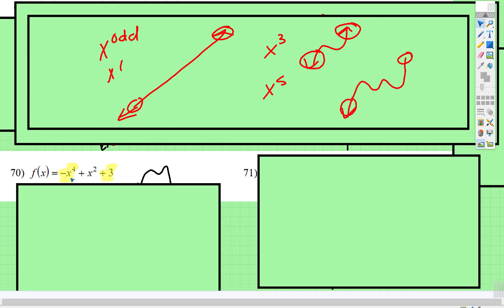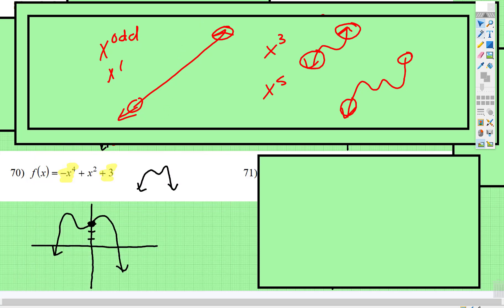So, for a negative x to the 4th, we know it's going to be turned upside down. And we know that it's touching right there at positive 3. Now, this graph may not look like that, but this is the general shape of that graph.